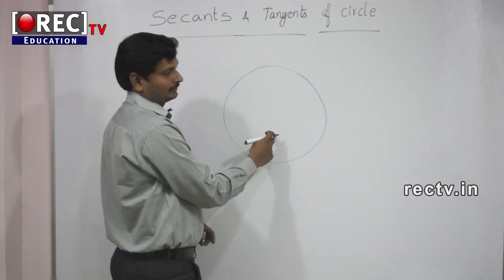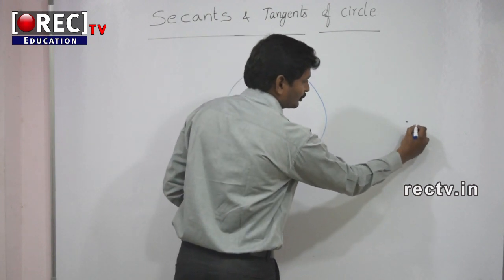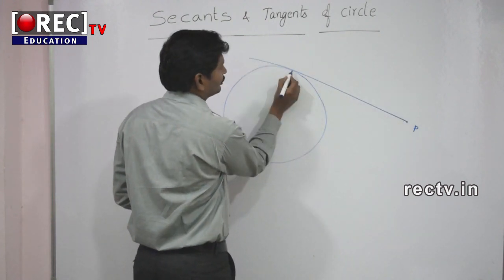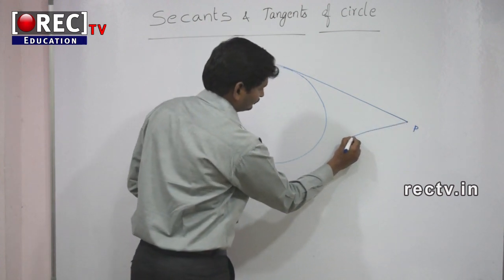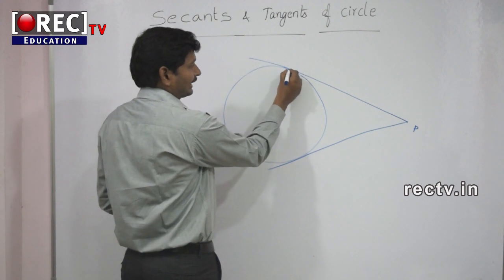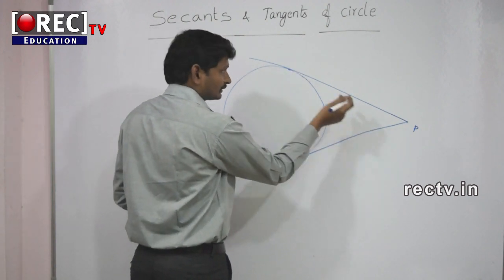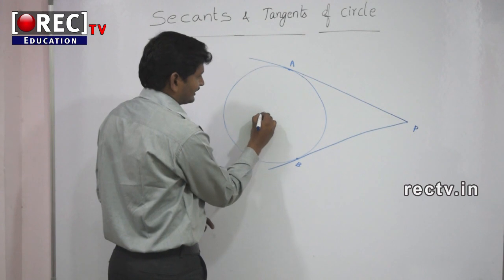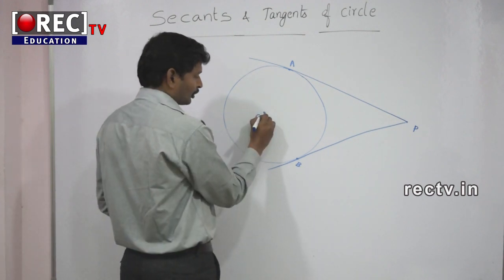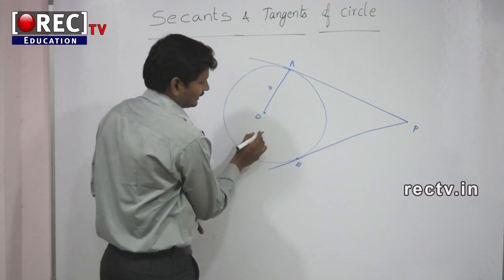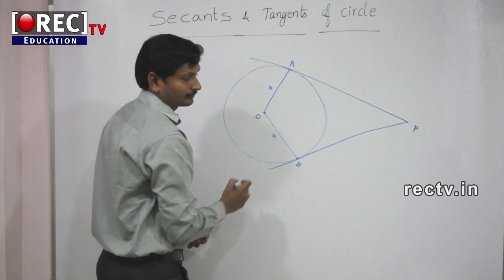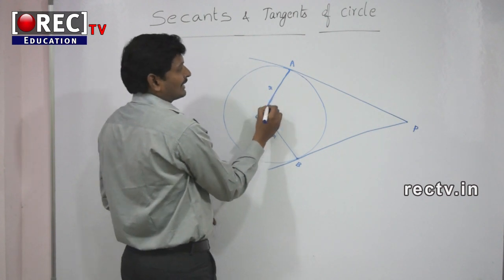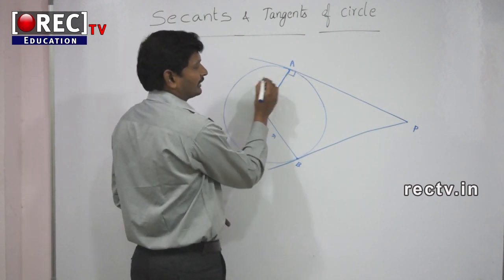Here this is the circle. If a point P lies outside the circle, we can draw two tangents from this outside point. Here the tangent from point P touches the circle at A and B. Here this is the center of the circle O, and this is radius r. The radius always makes an angle of 90 degrees with the tangent at the point of contact.